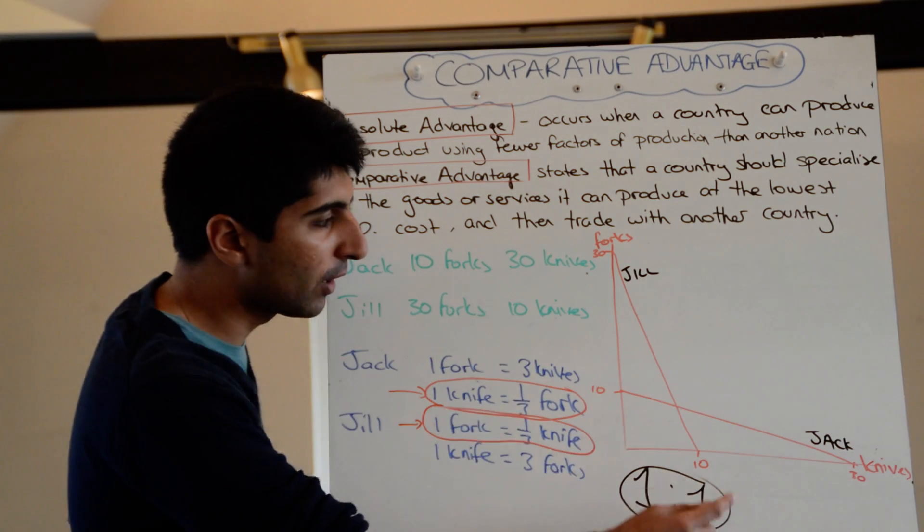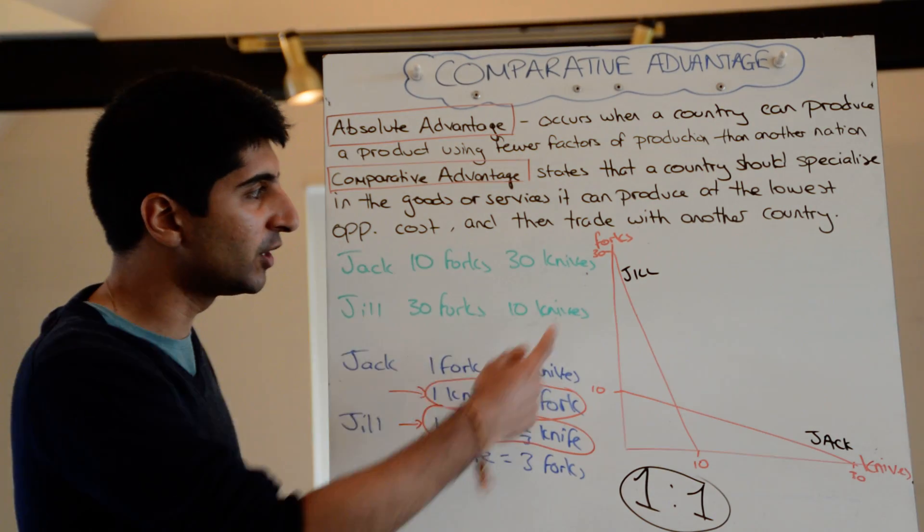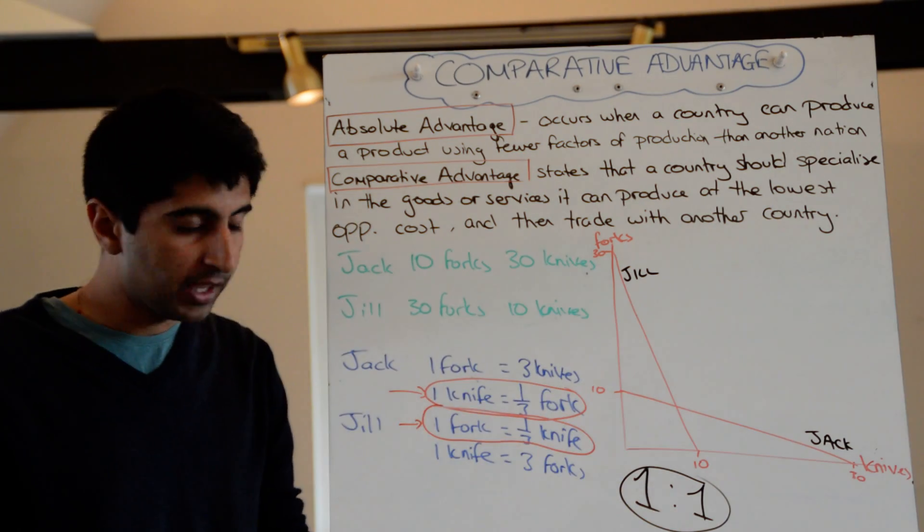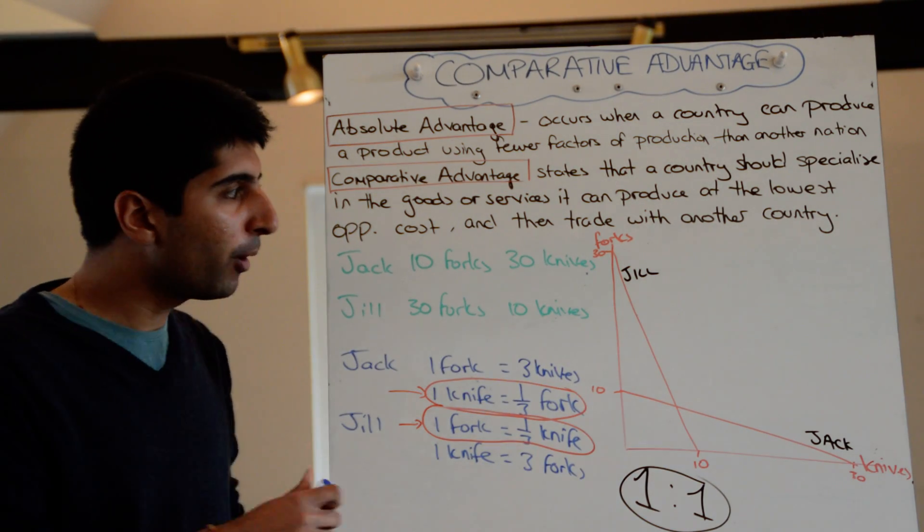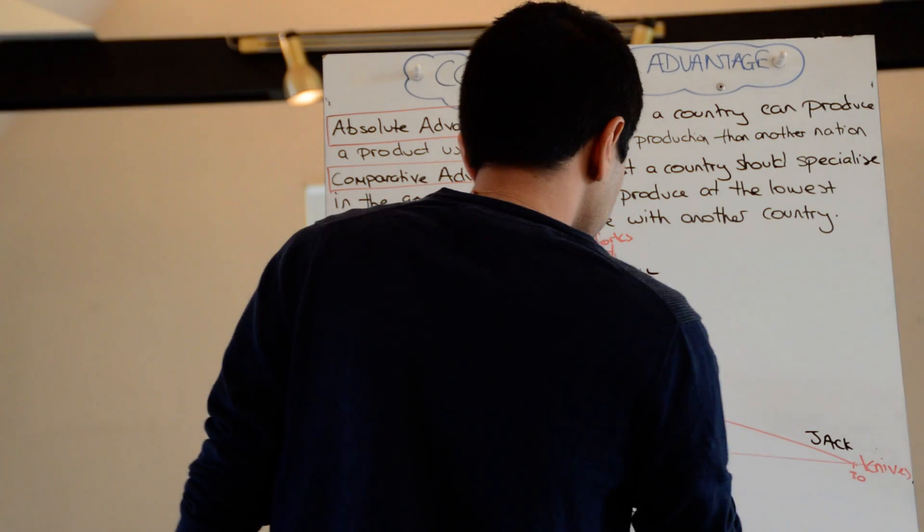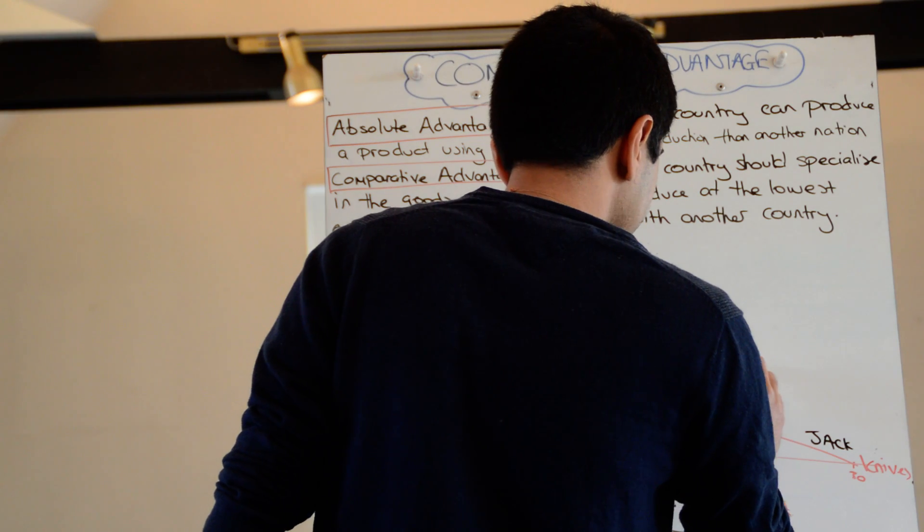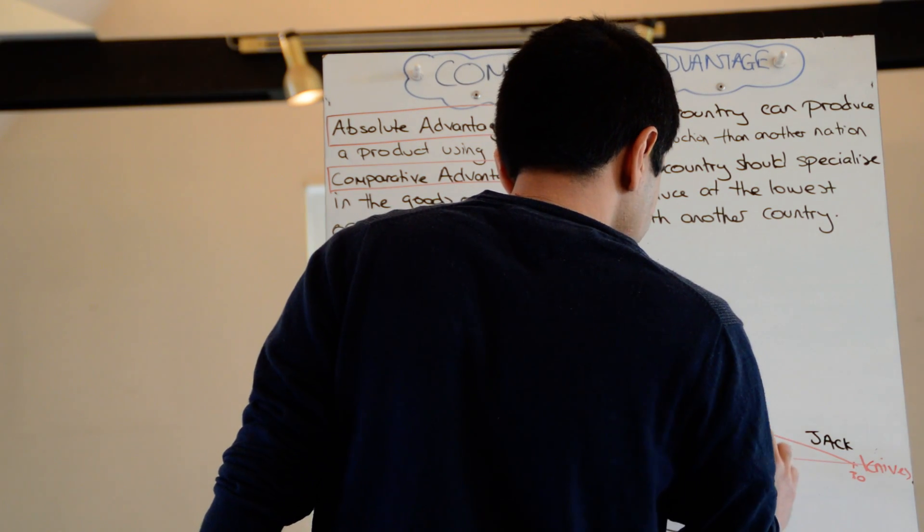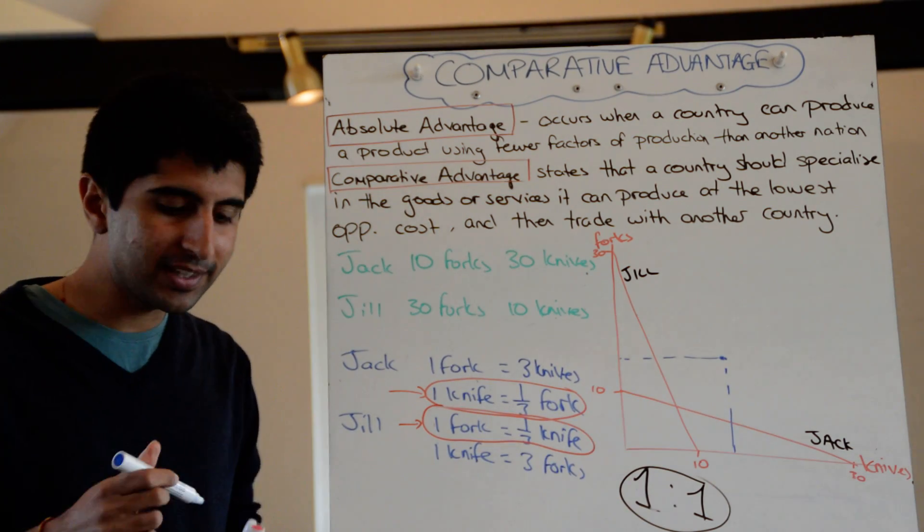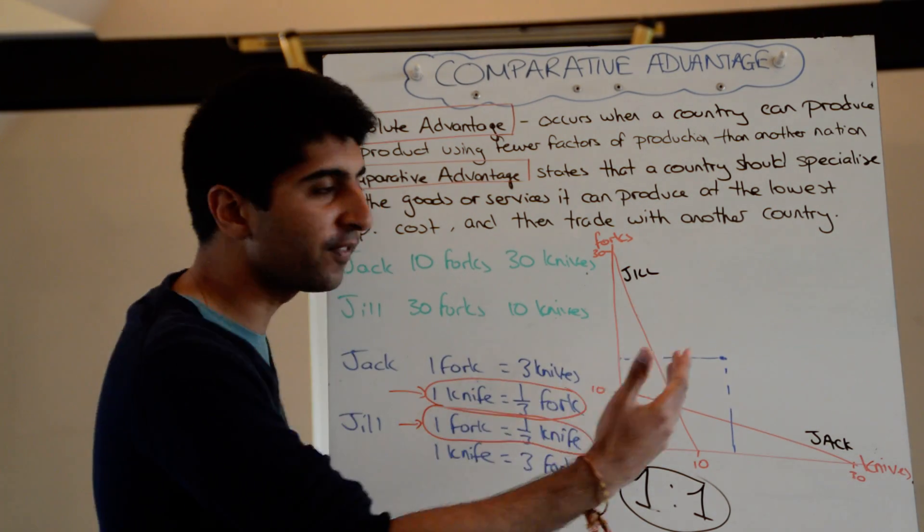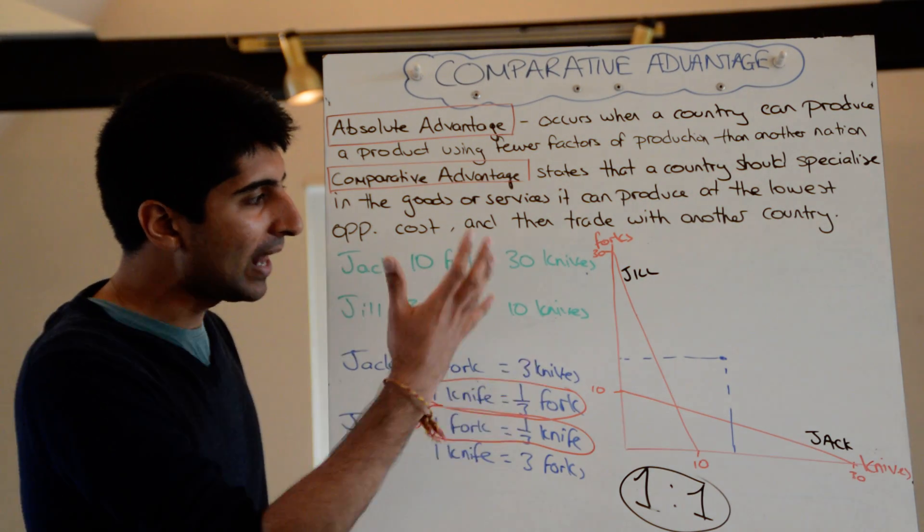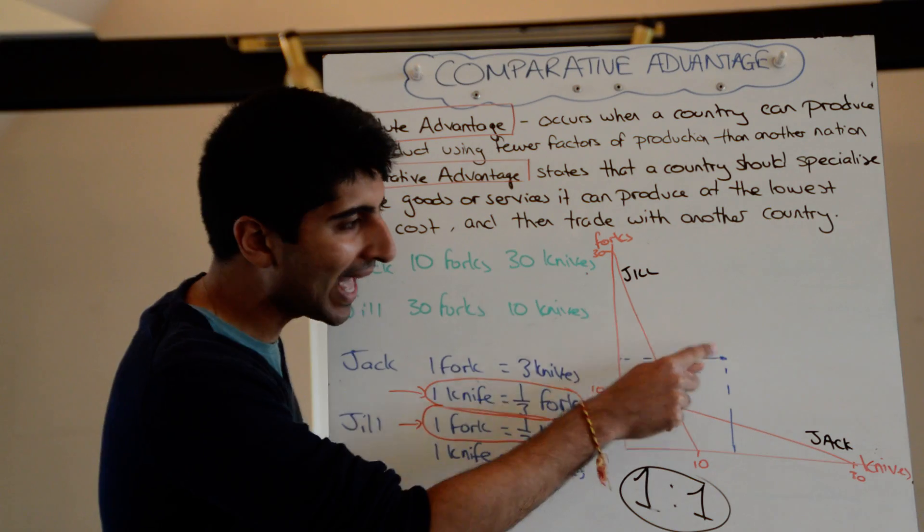What I've drawn on the right here are their respective PPCs. For Jill, thirty forks, ten knives. For Jack, ten forks, thirty knives, as shown there. Now, on this diagram, what both Jill and Jack cannot get to is to a point where they both consume, let's say, fifteen forks and fifteen knives. So this point over here is unattainable. It lies beyond both of their respective PPCs here. So left to their own devices, they couldn't get to that point.